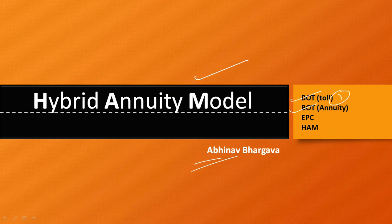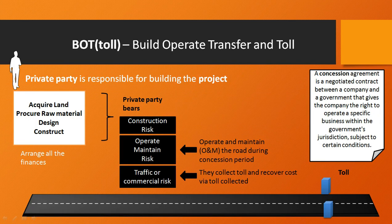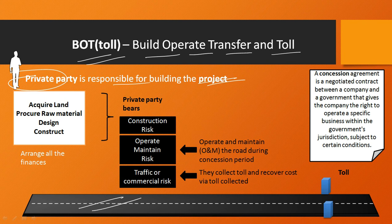The first one is BOT-TOL — that is Build, Operate, Transfer and Toll. As the name suggests, the private party is responsible for building the project, say construction of a road. For that, the private party acquires the land, procures raw material, designs and constructs the road. That is, the private party bears the construction risk.